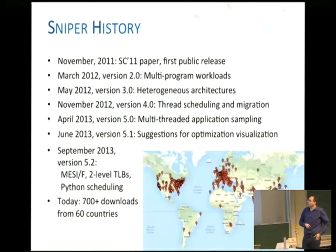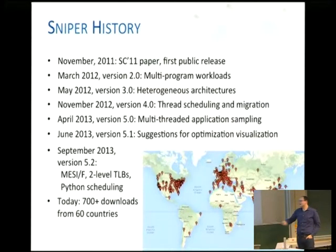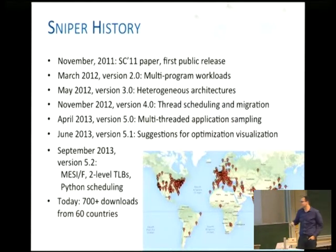This is a little bit of history of Sniper. We released our first version in 2011 and have made many revisions since then, adding lots of features. We've got around 700-plus downloads from researchers — some people are searching for shoot-em-up games, but we just discard those from the download count.